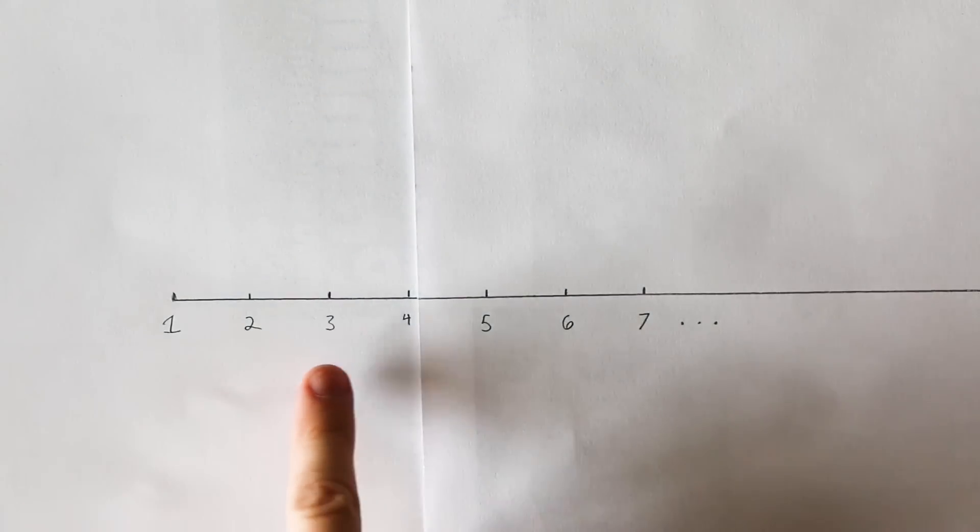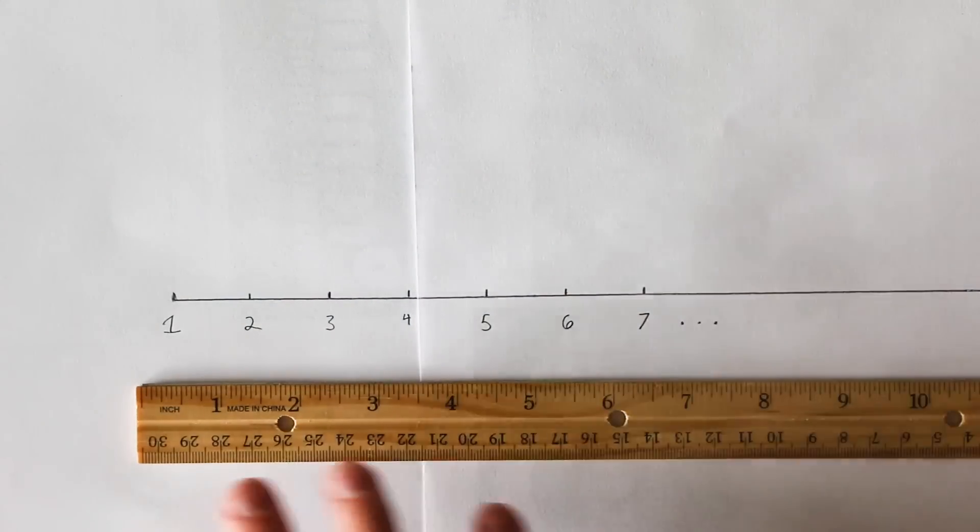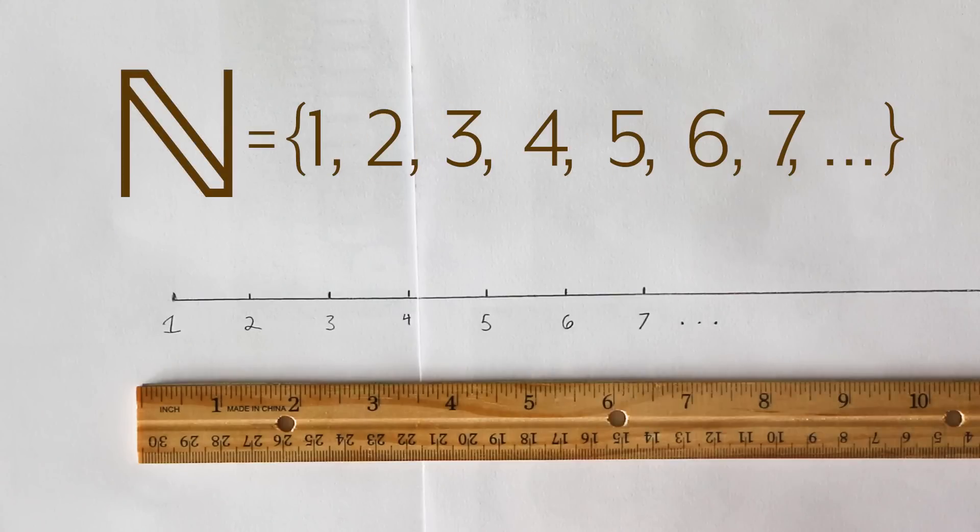The first collection of numbers is the one that you learned when you learned how to count. One, two, three, four, five and so on. It's a natural starting point. In fact it's so natural that's what they're called, the natural numbers, which we'll represent by this N thing here.